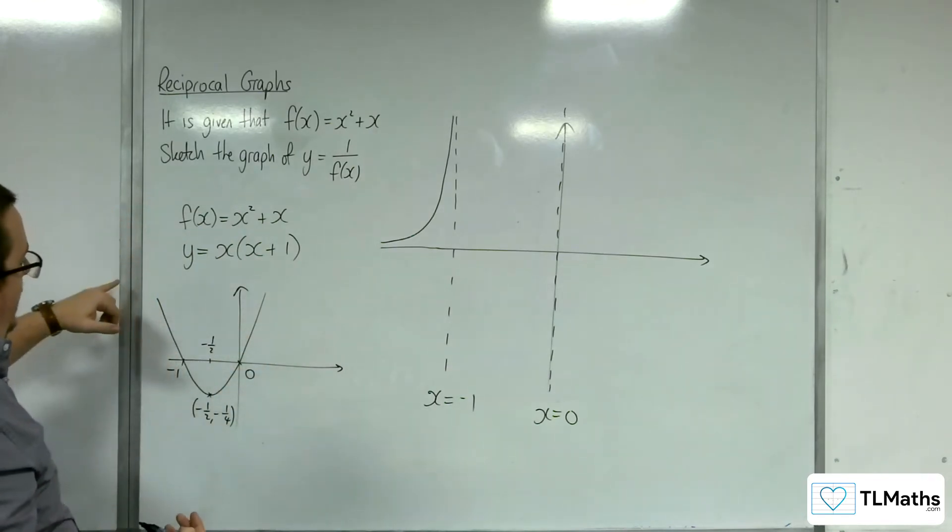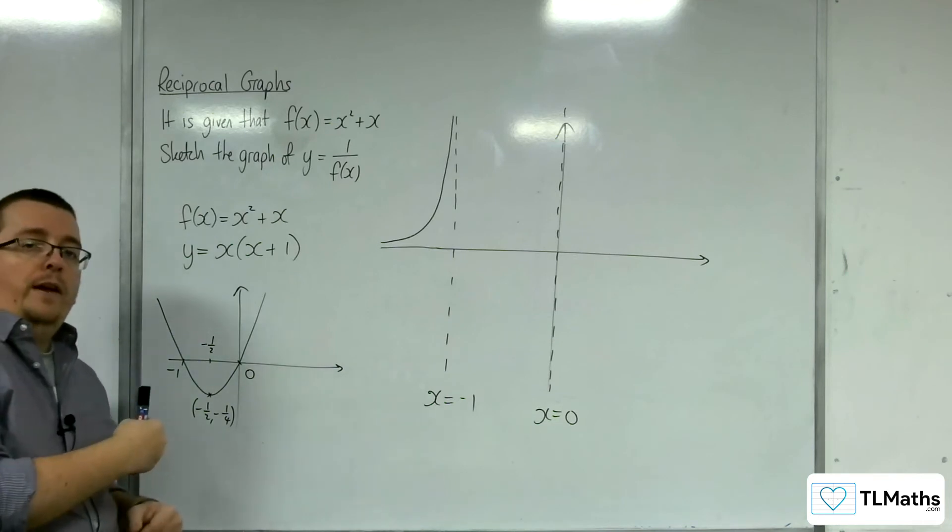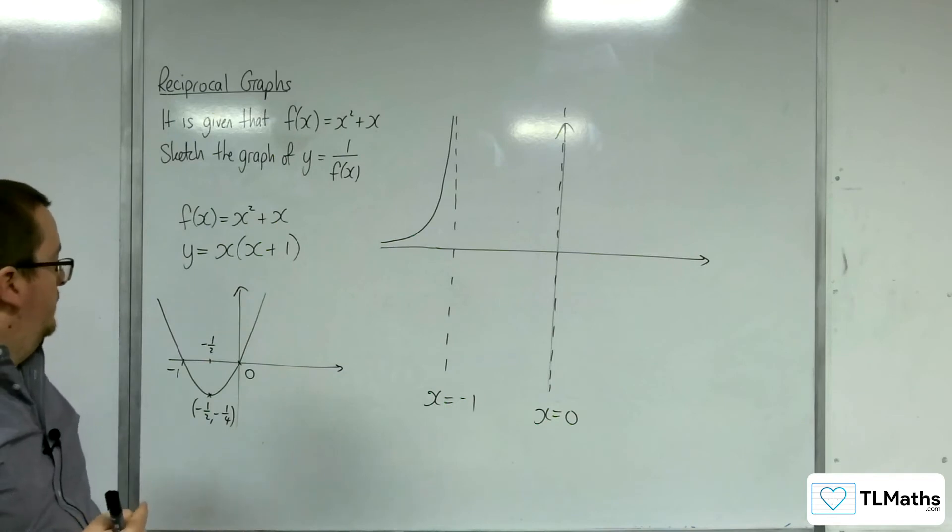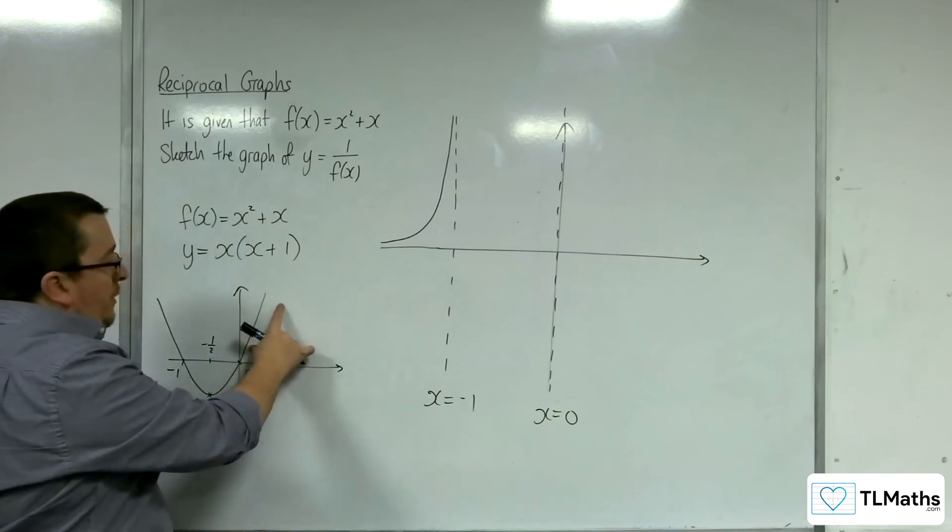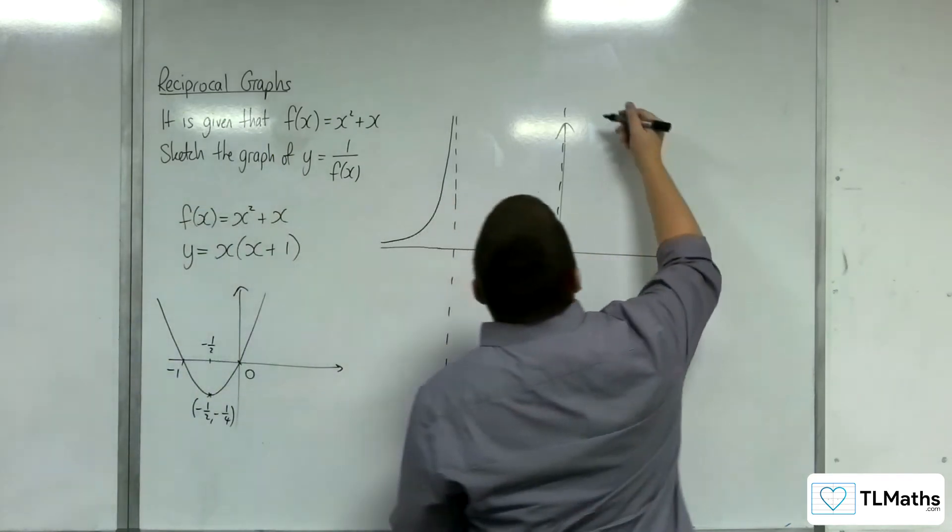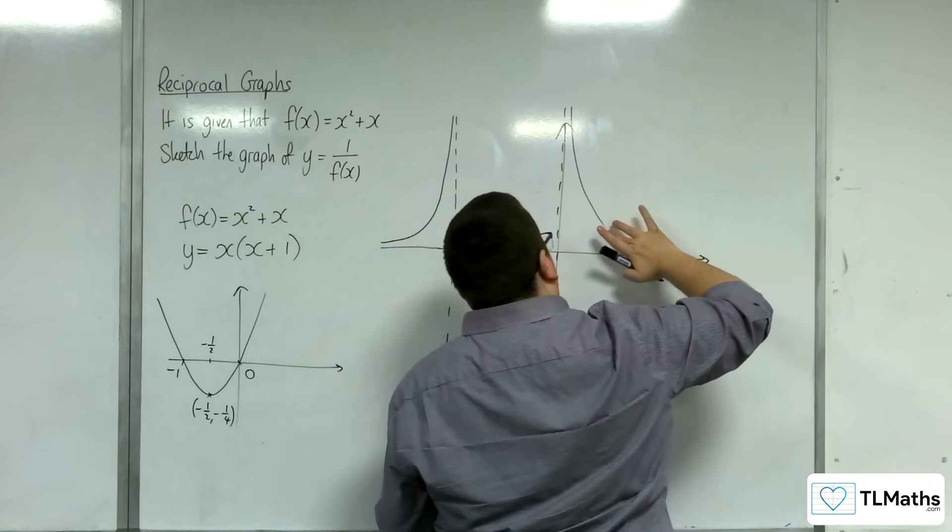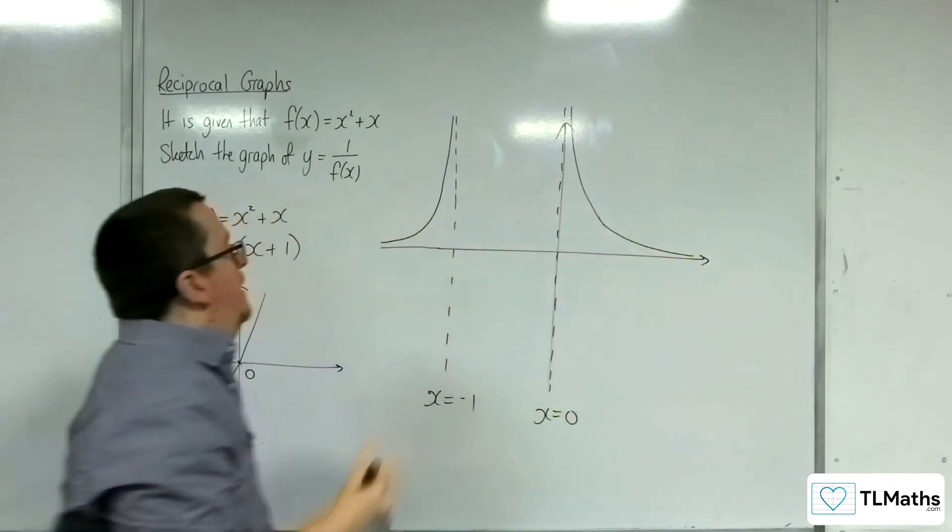As x increases in the negative direction, 1/f(x) will get smaller and smaller and closer to the x-axis. Likewise, to the right of 0, because the graph is positive there, 1/f(x) will be positive. It will look like that.